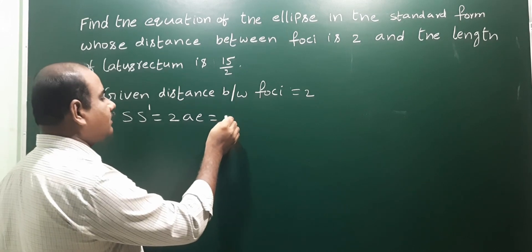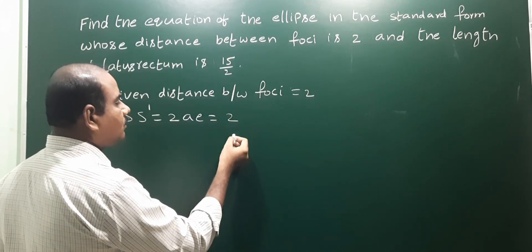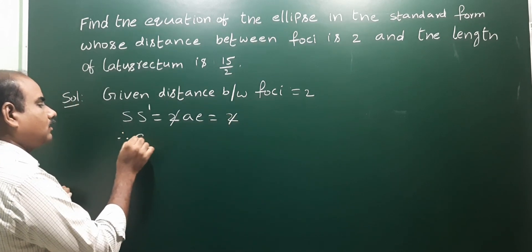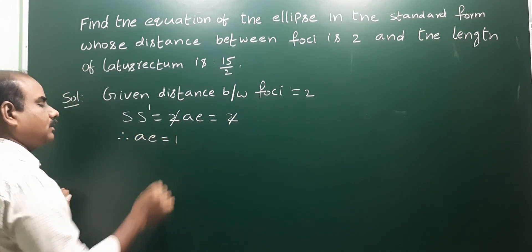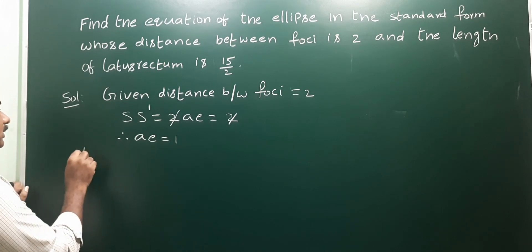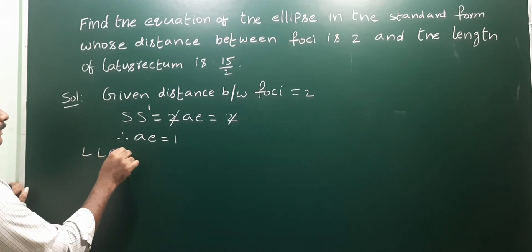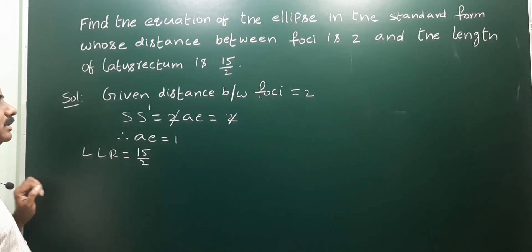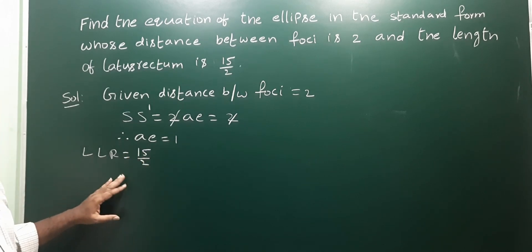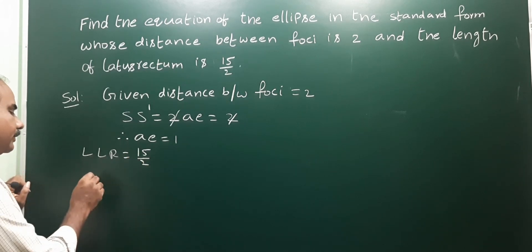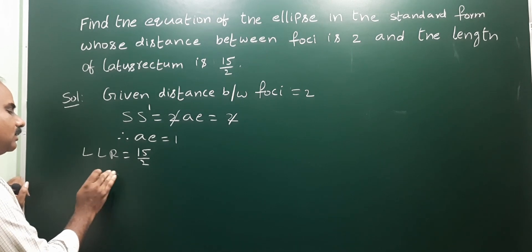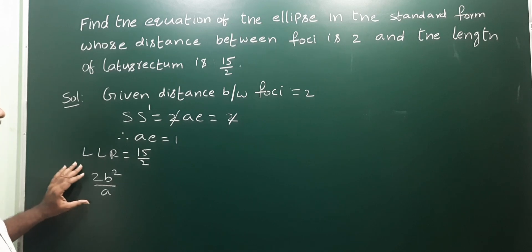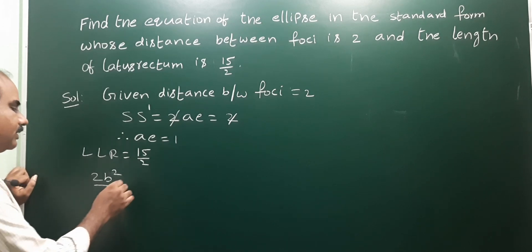Since the distance between foci is 2, we have 2ae = 2, so canceling 2 from both sides, ae = 1. Next condition: the latus rectum (LLR) is given as 15 by 2. The standard formula for LLR under the condition a greater than b is 2b² by a.